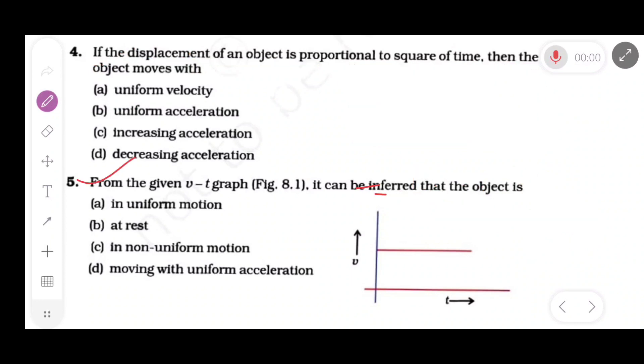Now question number 5. From the given V-t graph, it can be inferred that the object is. This is the velocity-time graph, and this graph is parallel to time axis. This means its speed is constant. Now option A is correct: in uniform motion.